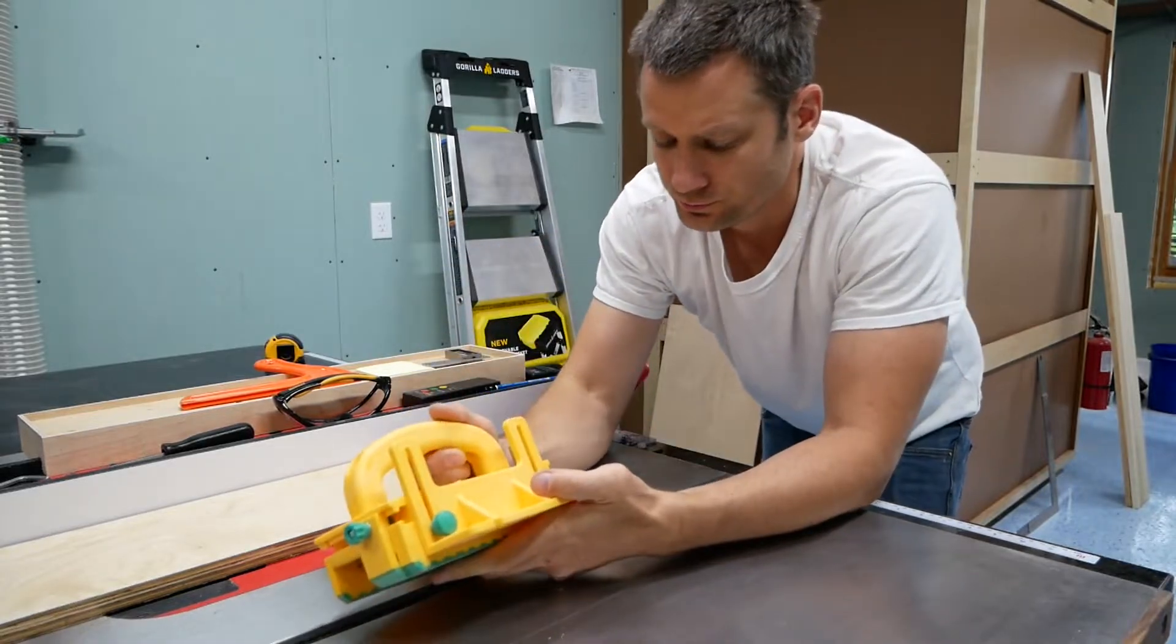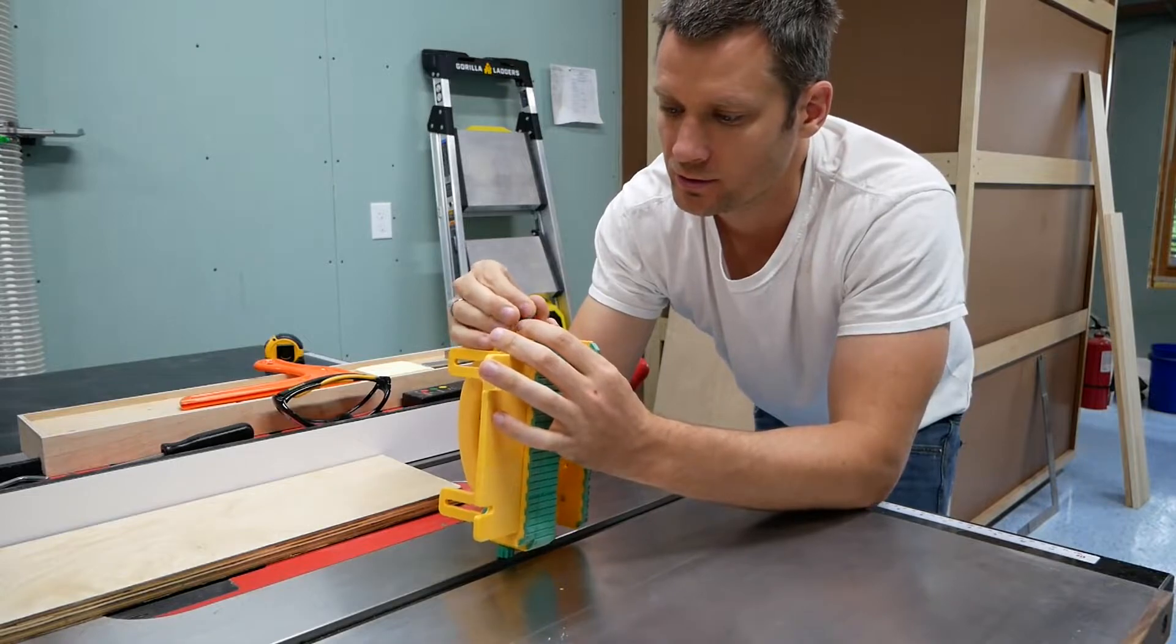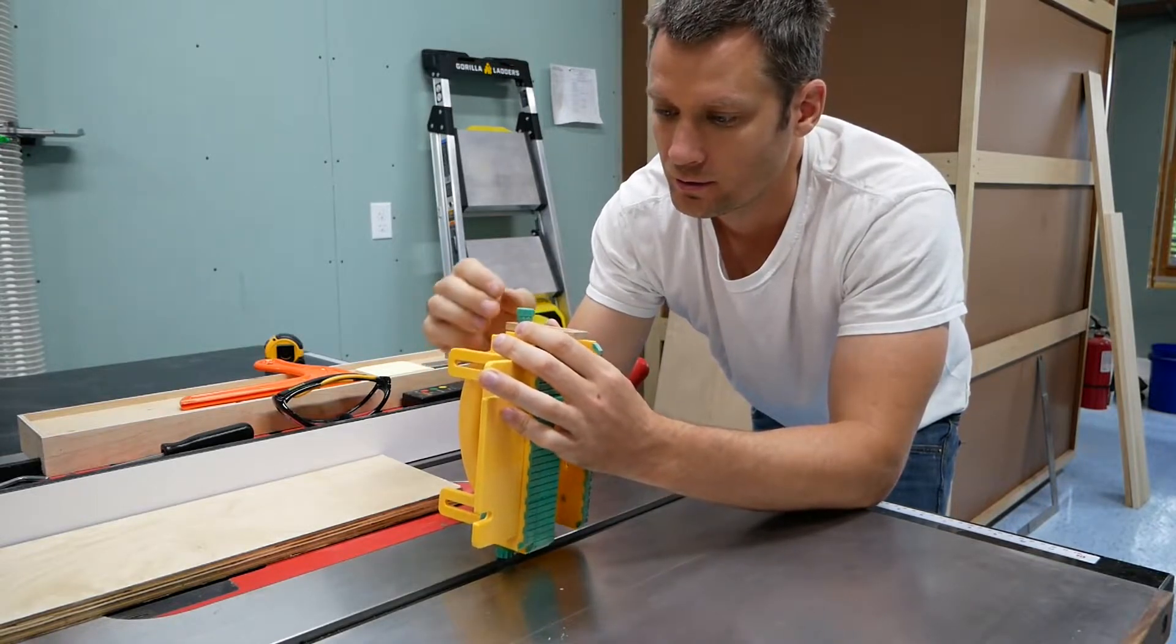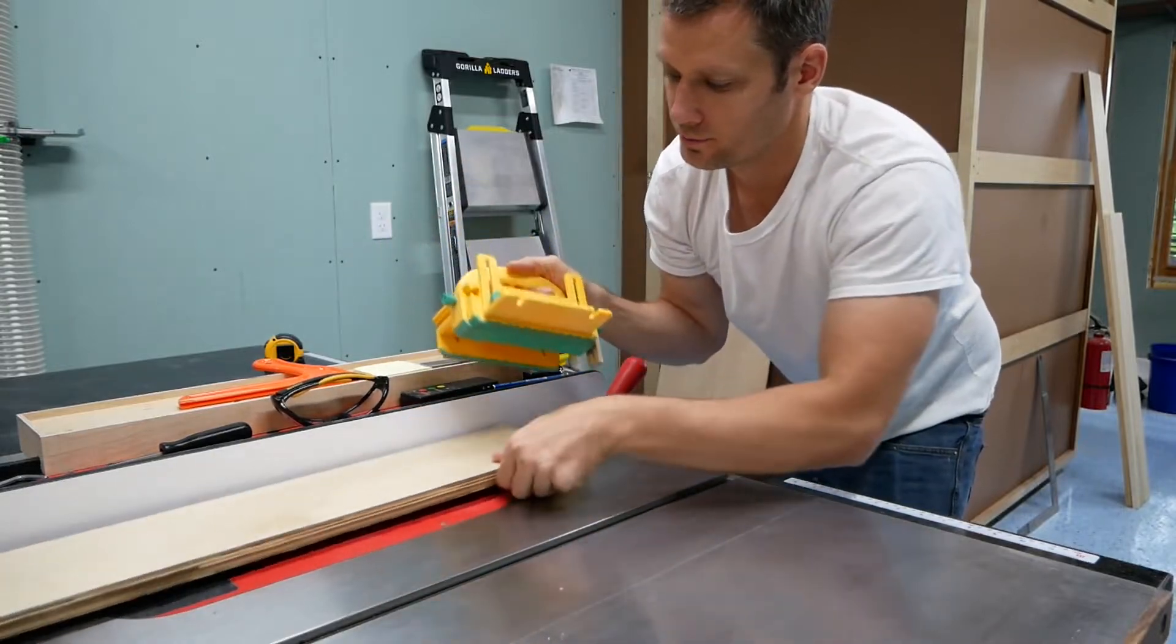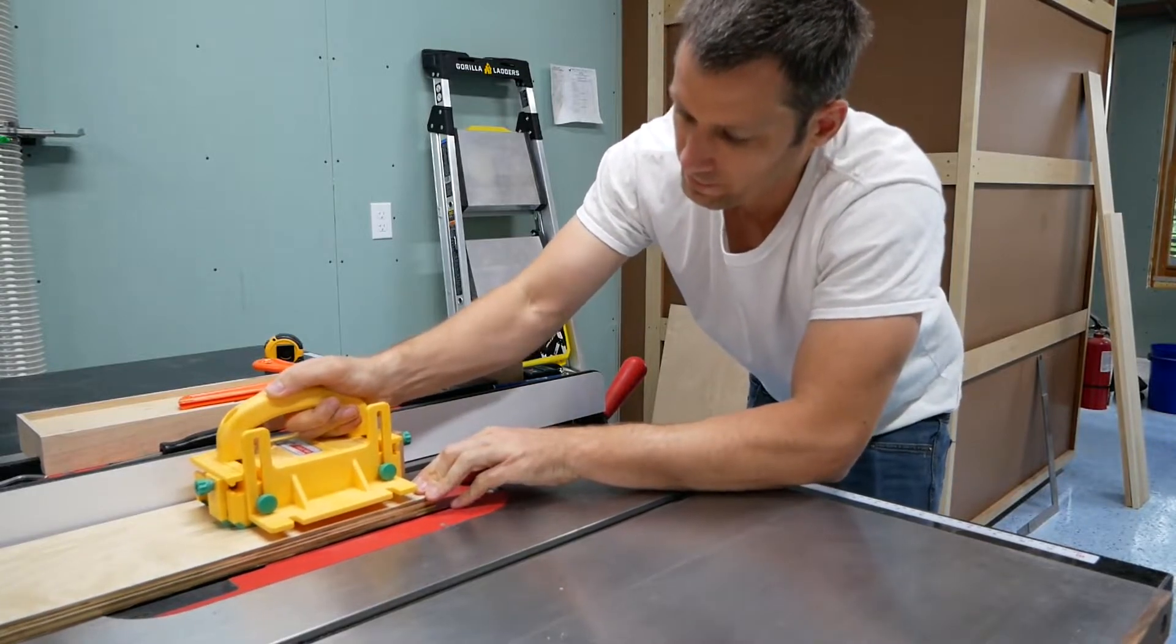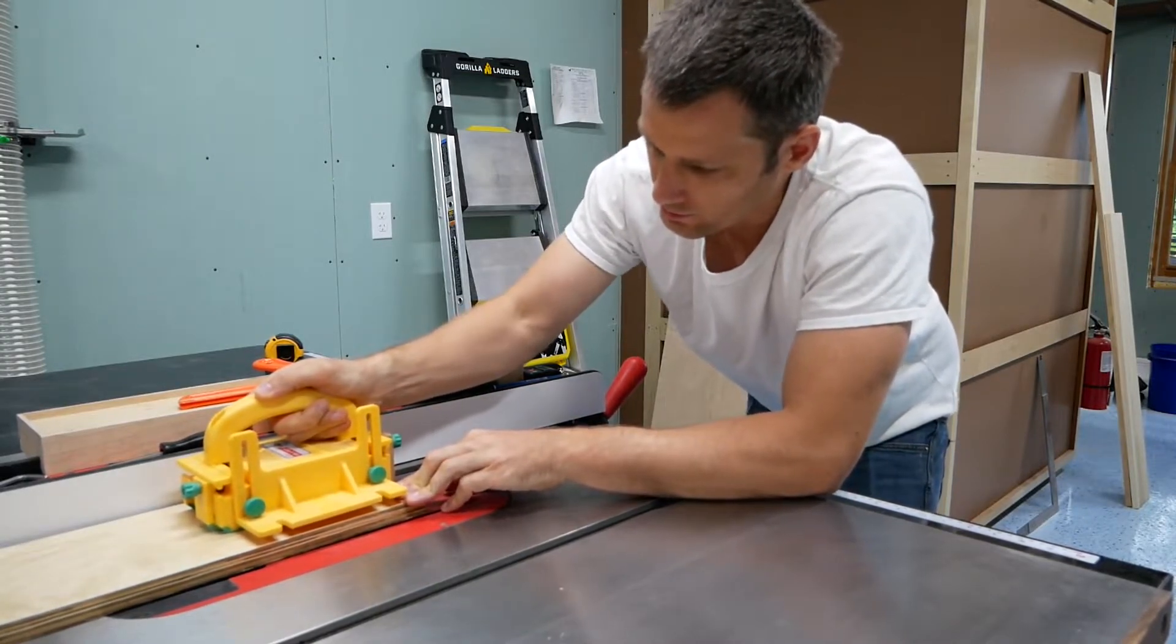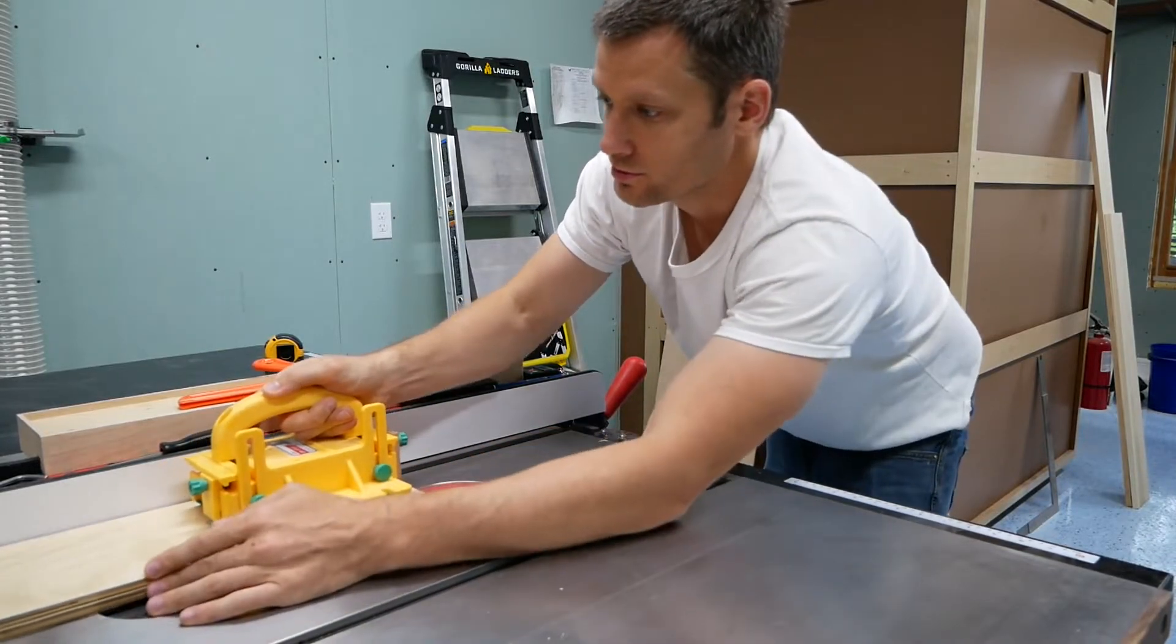And then if we did want to push something, you just kind of slightly loosen that, tighten it down. So if we had this piece of plywood here, it hooks right on there. And I can actually put quite a bit of pressure on there. If I had to put any more pressure than that, it probably means I shouldn't be pushing it through the saw.